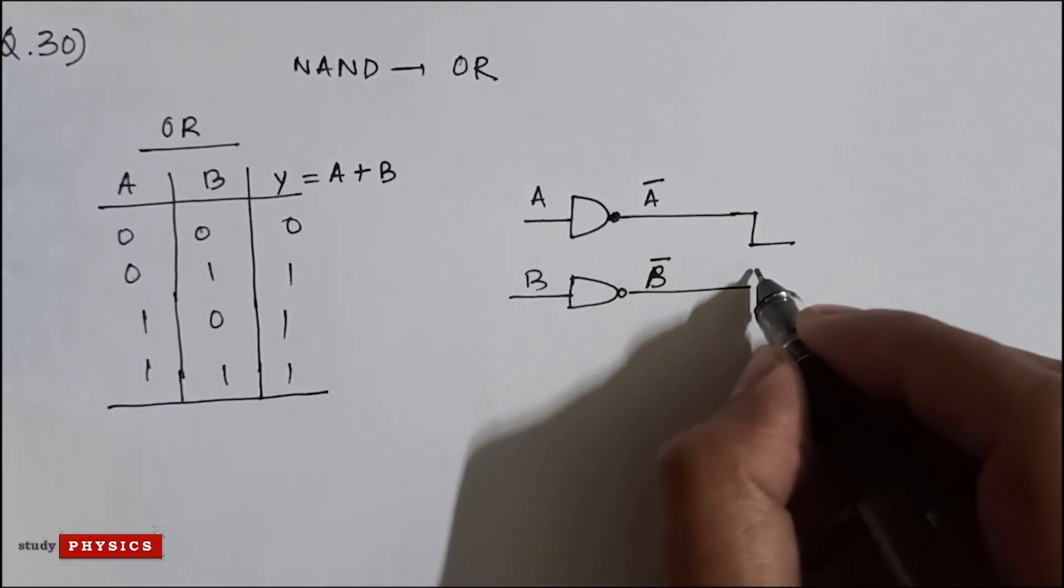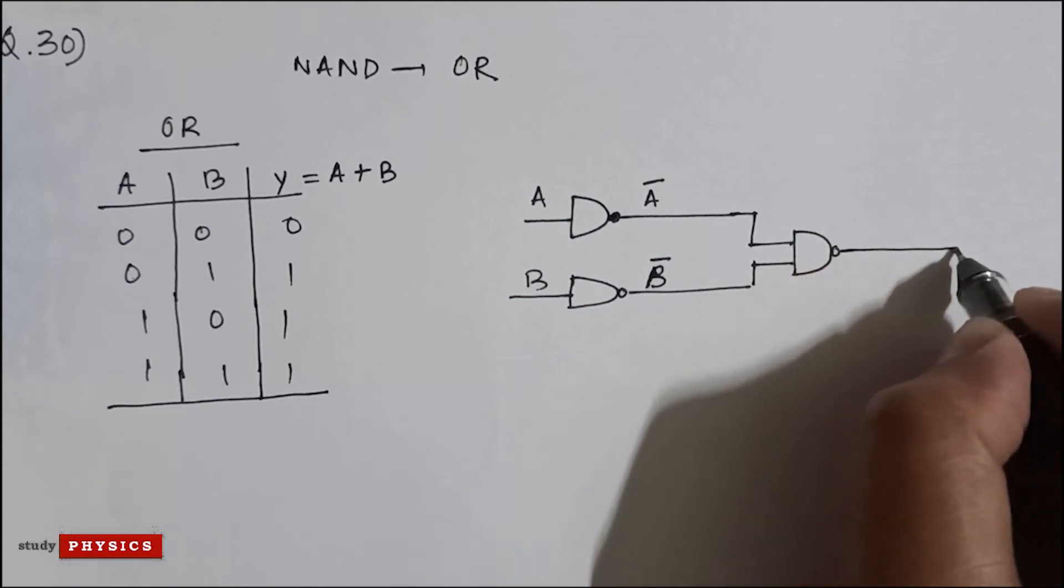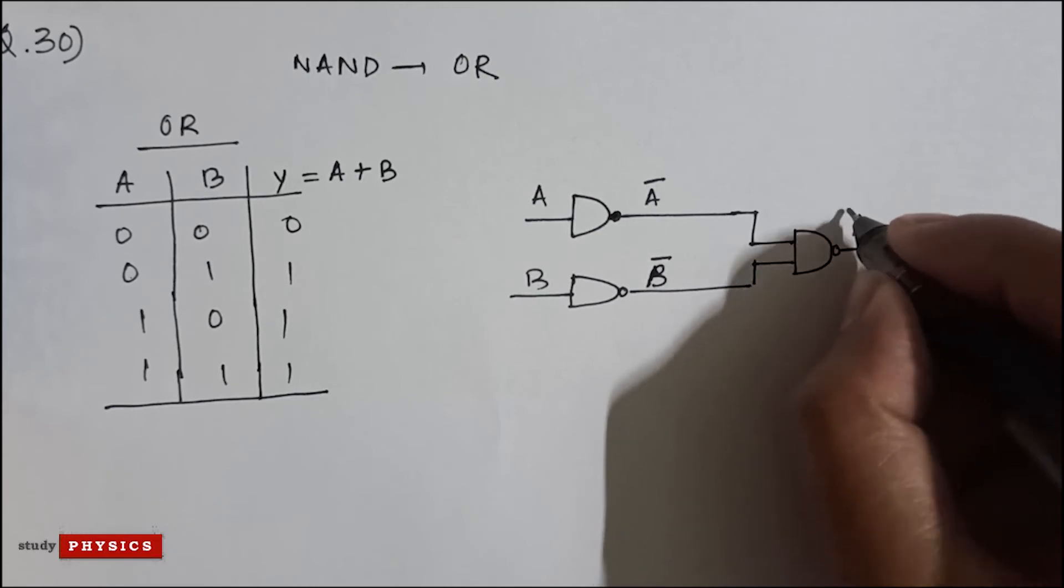is B bar. And if we connect this with another NAND gate, it means this will be A bar dot...